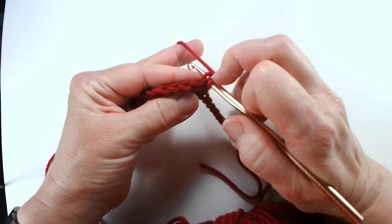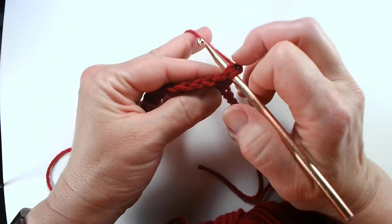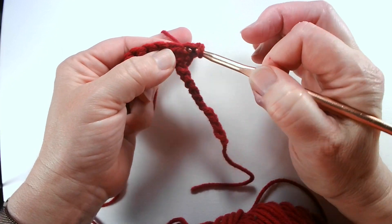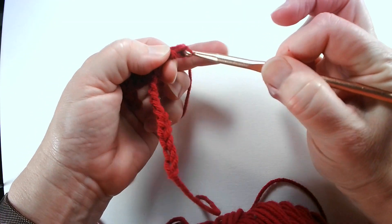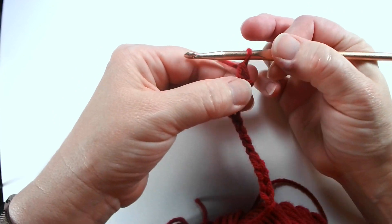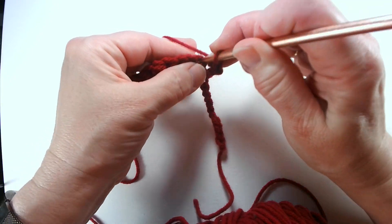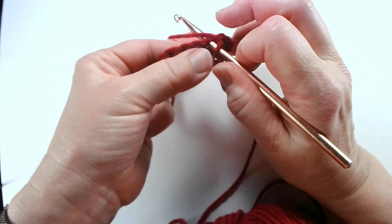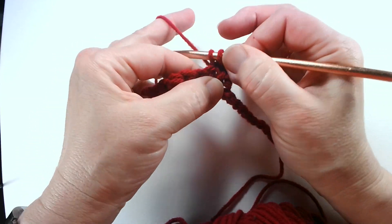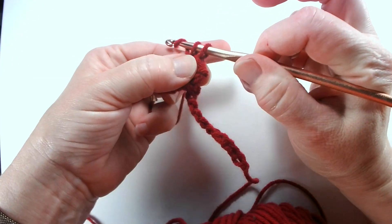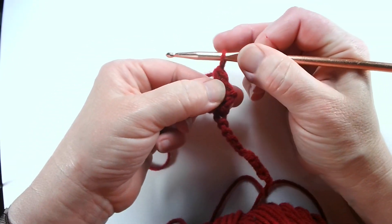You're going to put your hook through that. So then there's two pieces on top. Grab, grab, pull through. Grab again, pull through two. You have one on your hook. You put through the next hole. Wrap around. Pull through. Wrap around. Pull through two.